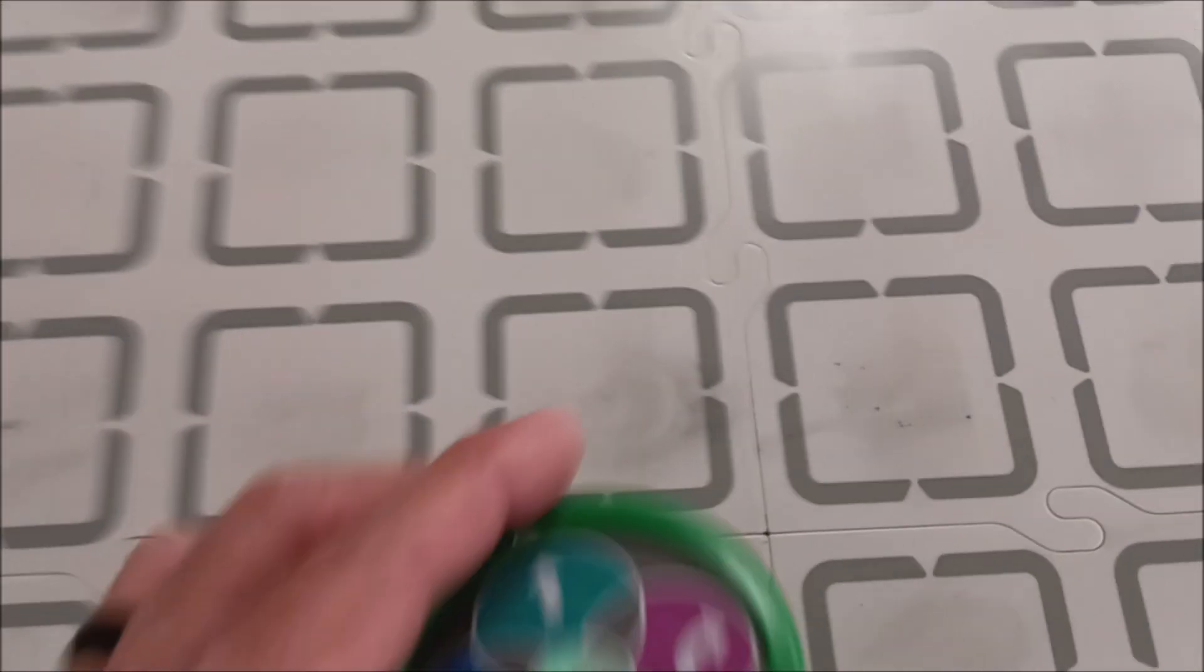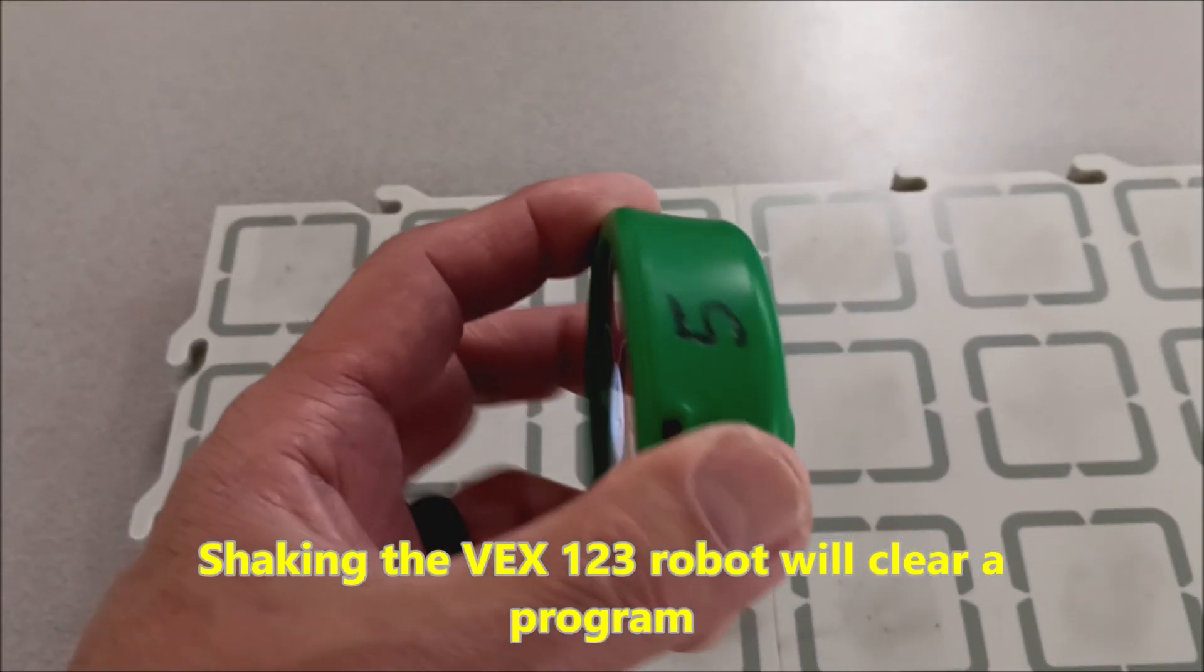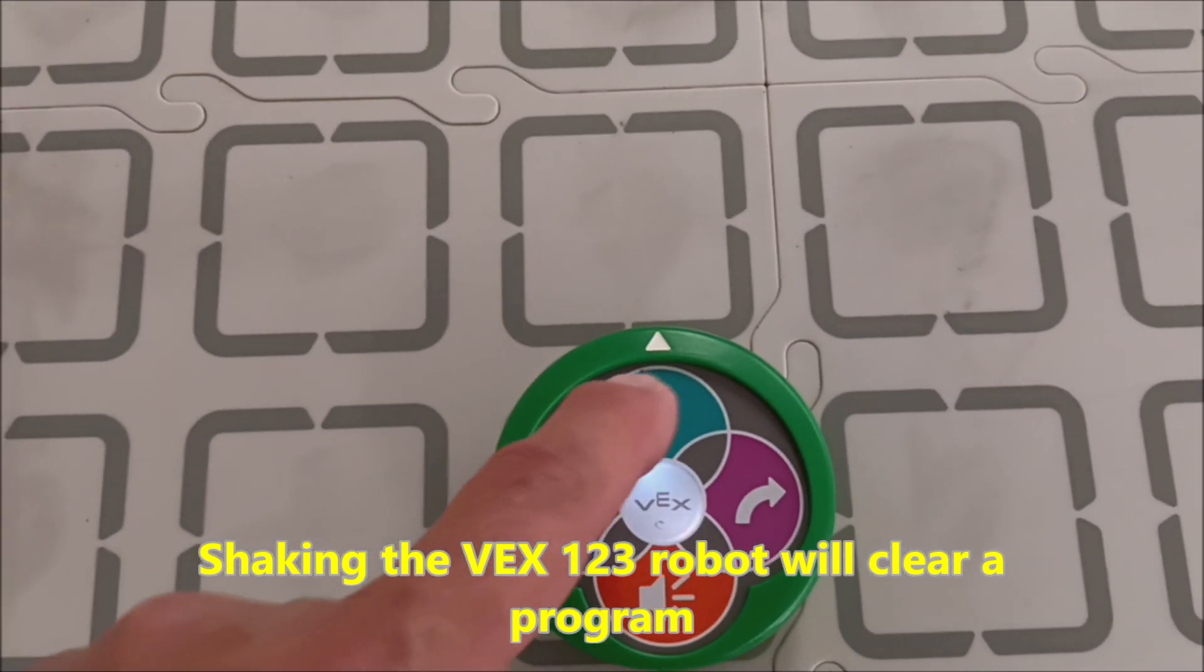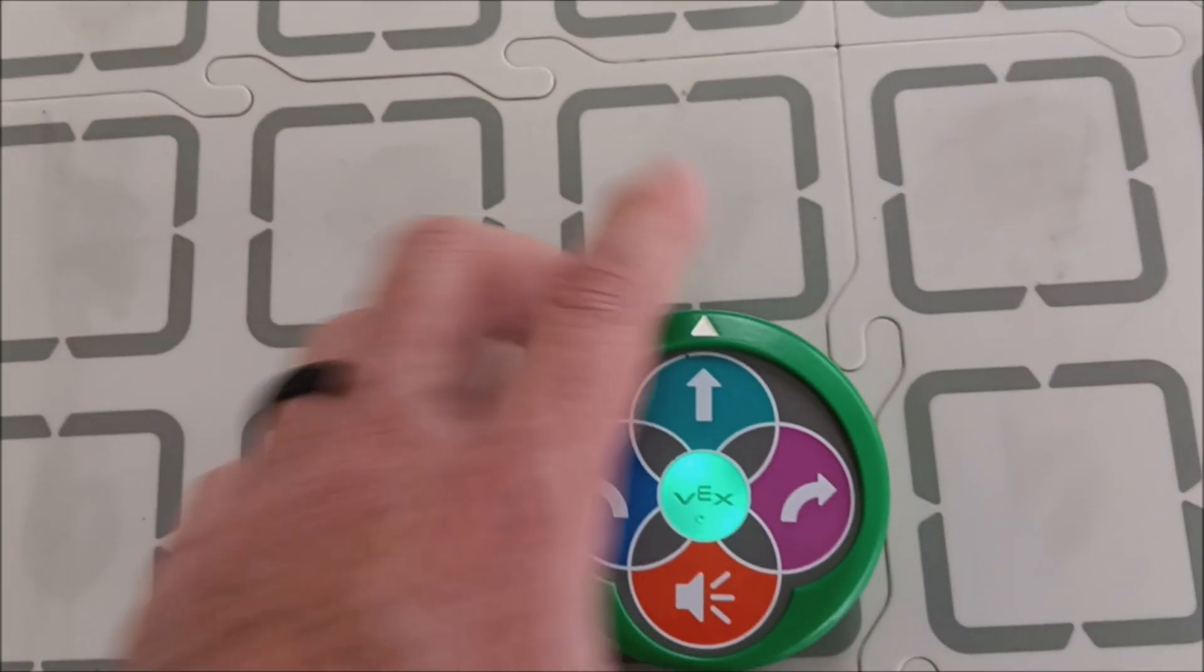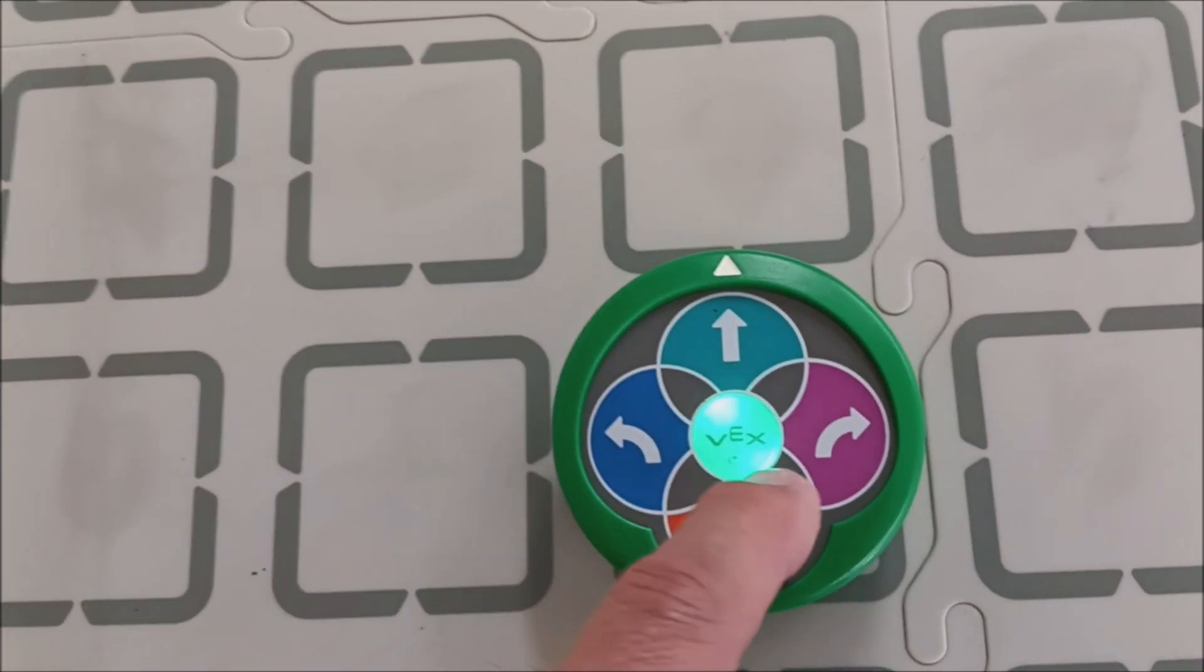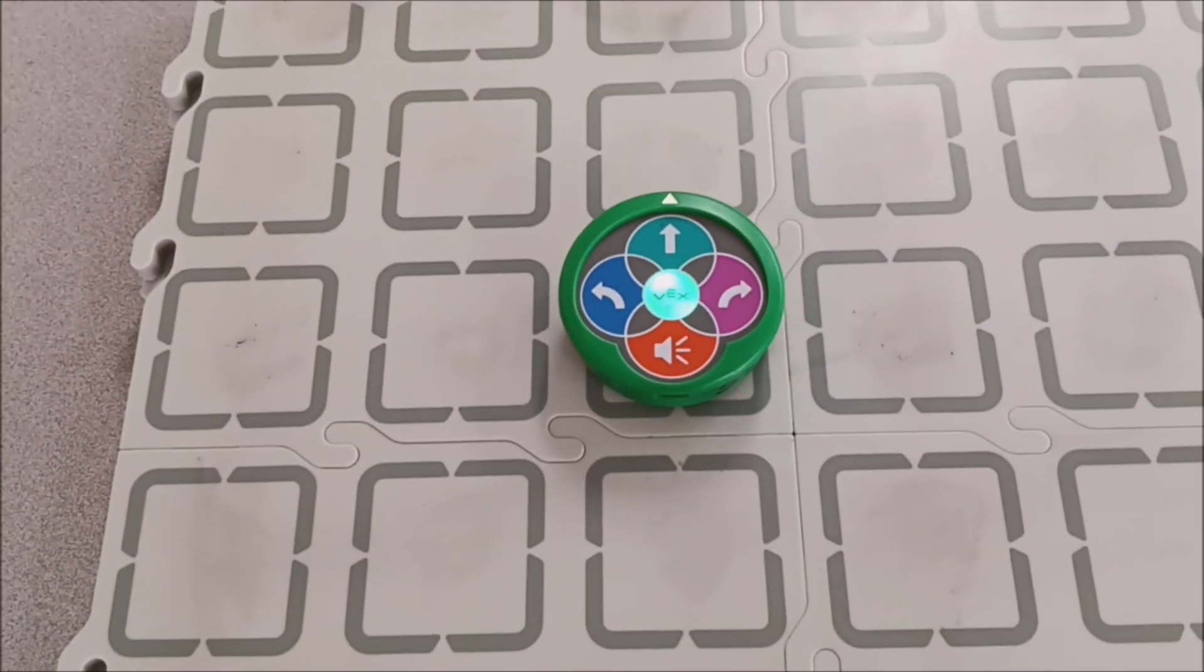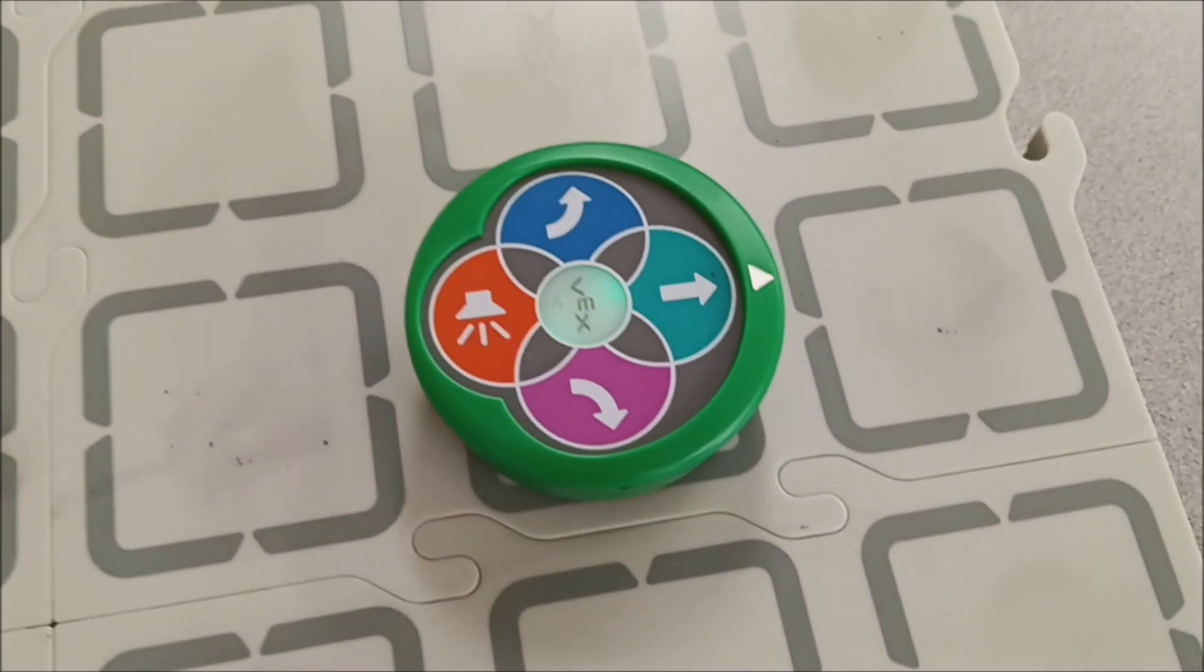Let's run that again. If you want to get rid of a program, you're just going to give it a shake. And it just cleared it. Let's do a forward, forward, and then a right turn and another two forwards. Let's see how that goes. And there you go.